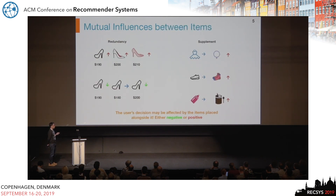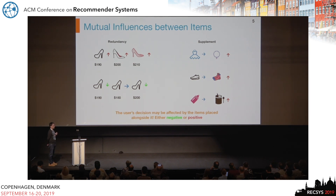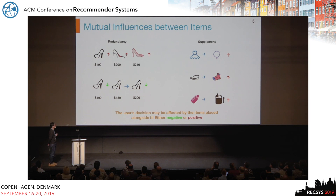However, as shown before, for recommendation apps, a large number of items are recommended to users at the same time, and all these items are displayed in a top-down manner. So there are mutual influences between items.